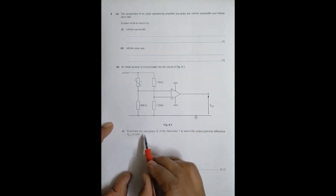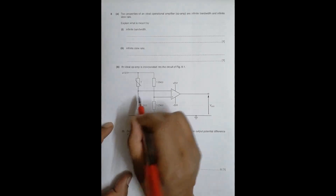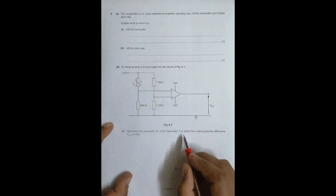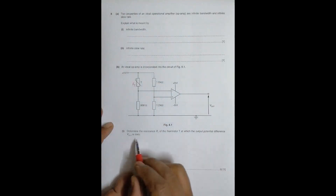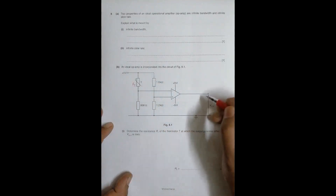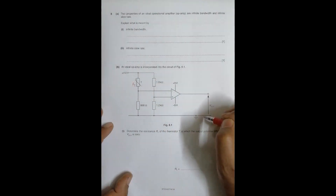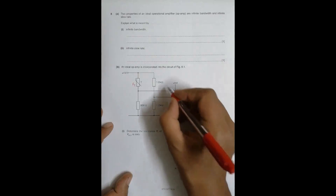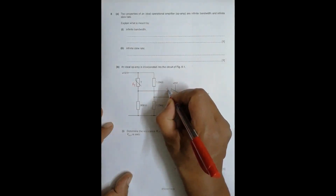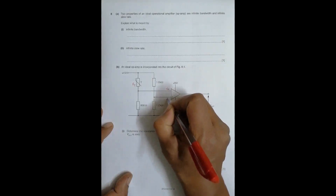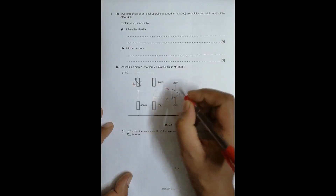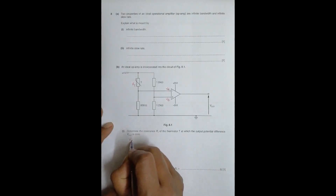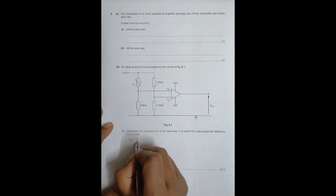We need to determine the resistance RT of the thermistor at which the output potential difference Vout is zero. For Vout to be zero, the potential at the two inputs must be equal — VA must equal VB.